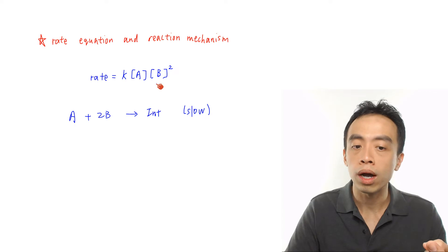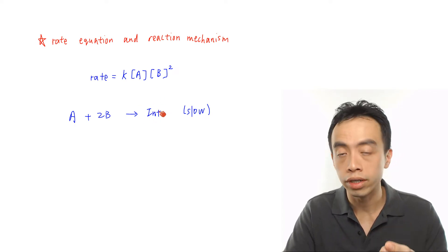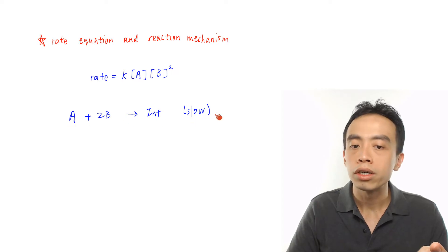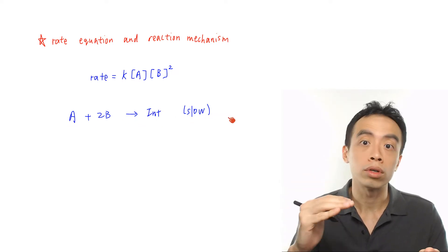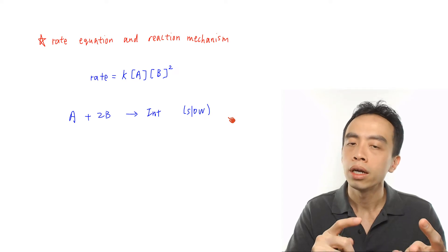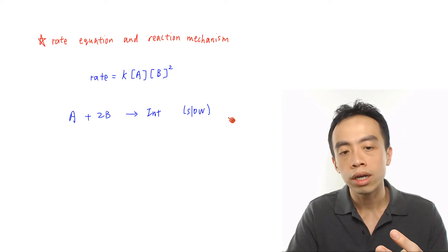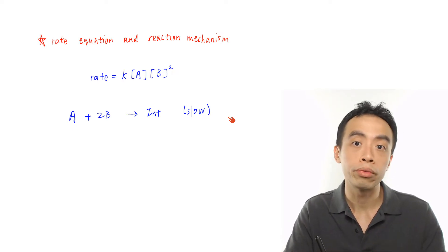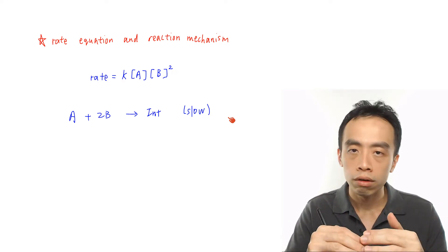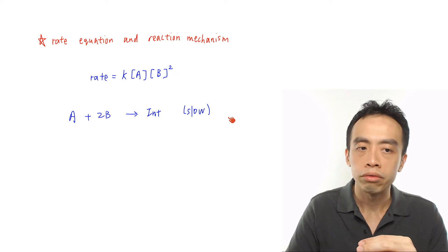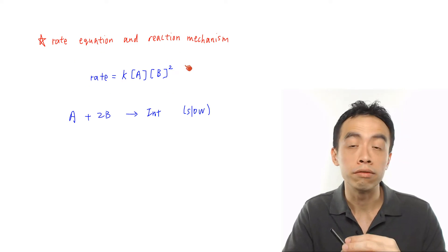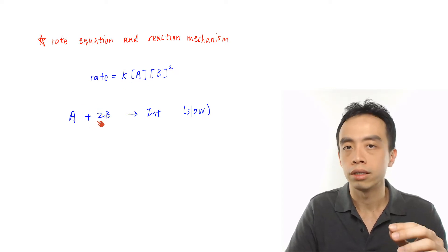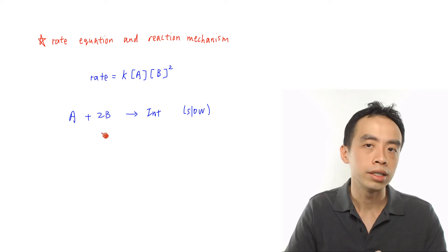First, it doesn't tell me what products are being formed in the rate determining step. Second, it doesn't tell me whether this slow step is the first, second, or third step of the reaction mechanism. Third, it doesn't tell me in total how many steps are inside this mechanism — it can be a two-step, three-step, or four-step reaction. The rate equation only tells us the number of species involved in the rate determining step.